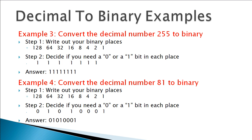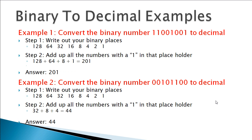Now what about going back the other way — binary to decimal? That's equally as important. Let's take the binary number 11001001. Break it down: write out your places. We have a 1 in the 128s place, a 1 in the 64s place, a 1 in the 8s place, and a 1 in the 1s place. Add those up — 128 plus 64 plus 8 plus 1 — and we get 201. So 11001001 in binary is 201 in decimal.